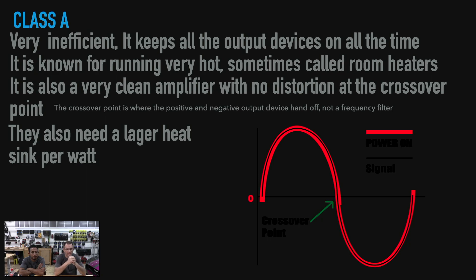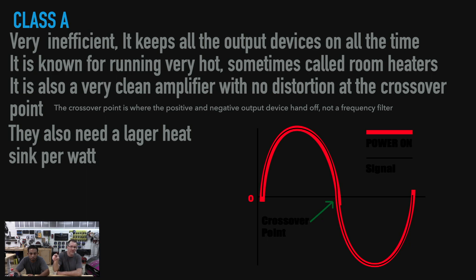Now we're going to stop right here for a second because I have to explain what the crossover point is. That green arrow there that says crossover point — that is the actual crossover point in audio. What is on your amplifier that you often refer to as a high pass or low pass crossover is actually a high pass or low pass filter. When you talk to an engineer that designs amplifiers and you refer to the crossover, he's assuming you're talking about where your positive wave and negative wave cross over the zero line, not the filter. So for the rest of this, we'll be referring to the crossover point as where the positive and negative wave cross over the zero point.